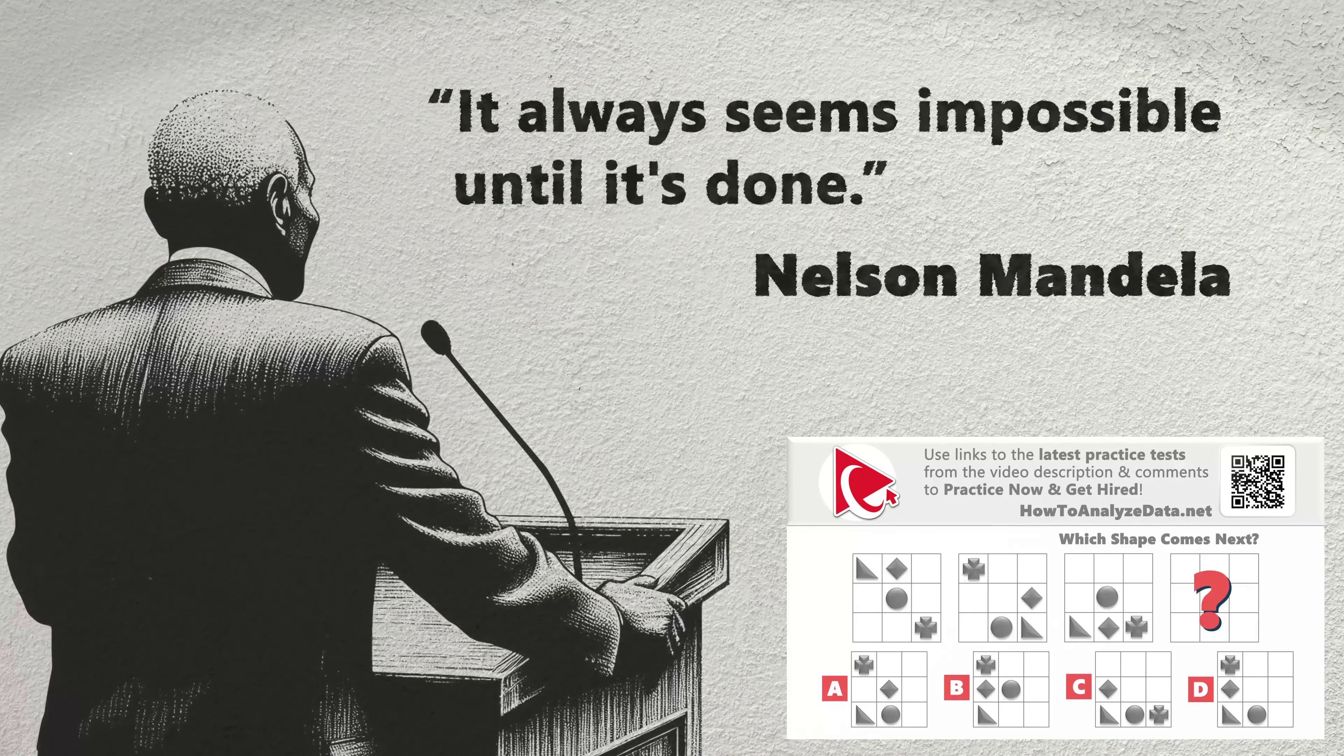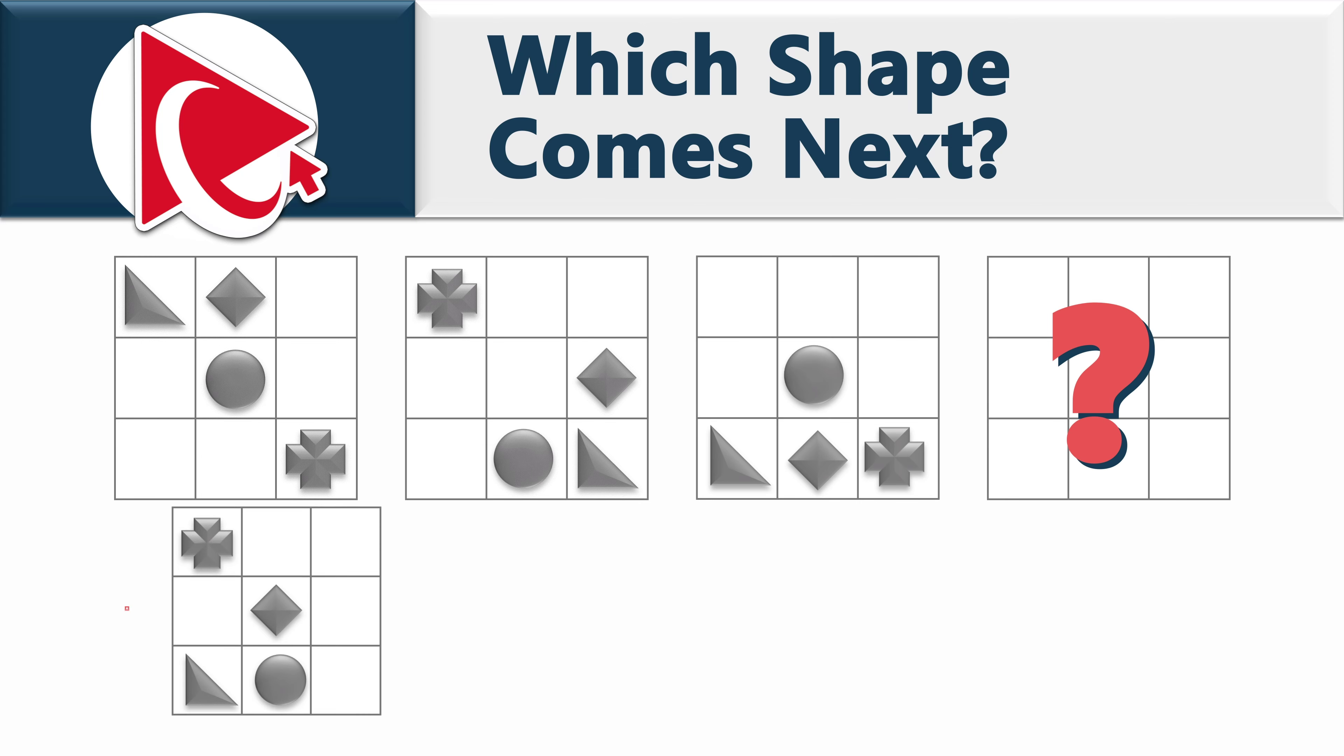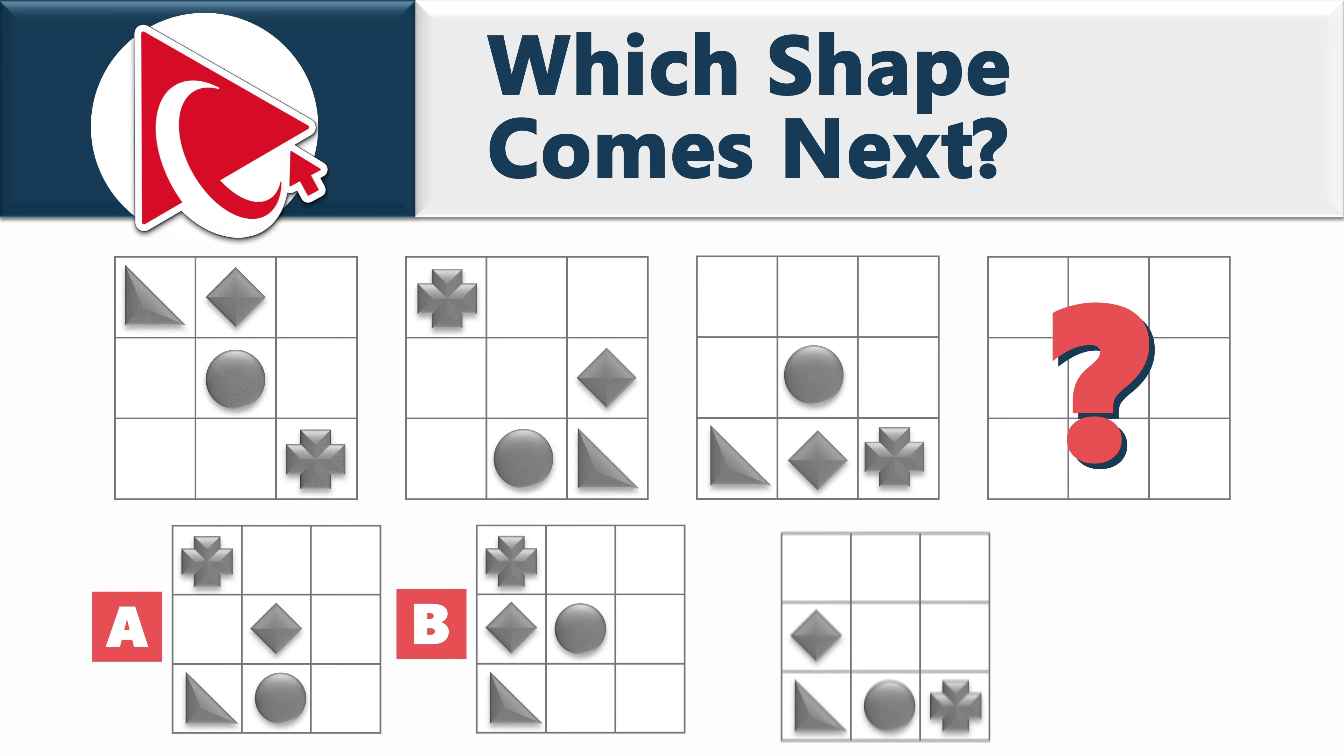You're presented with three shapes, and the fourth shape is missing. You need to select the missing shape out of four possible choices: A, B, C, and D.